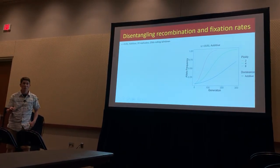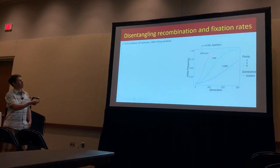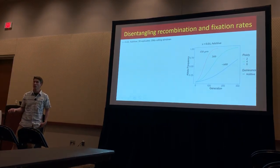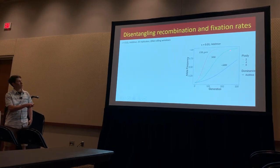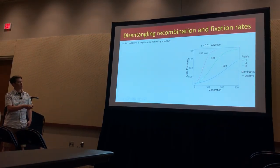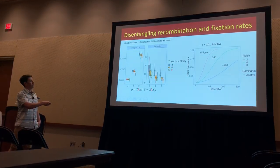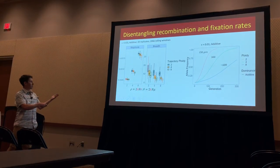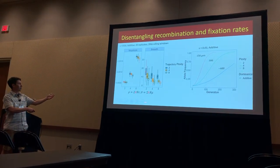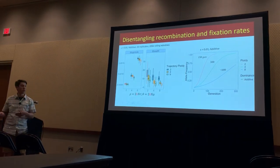One thing we can do is take the approximate fixation time for our three different ploidies — which is approximately another factor of two: it takes twice as long for tetraploids to fix as diploids, and twice as long for octoploids compared to tetraploids. So I can call these a fast, medium, and slow sweep, and then compare that factorially by varying the recombination rate or the ploidy used for calculating these values, allowing us to disentangle which forces are really driving the effects on diversity.